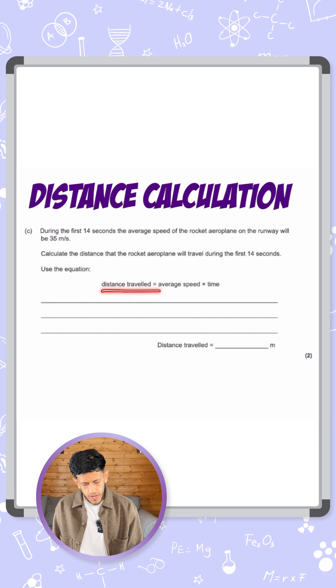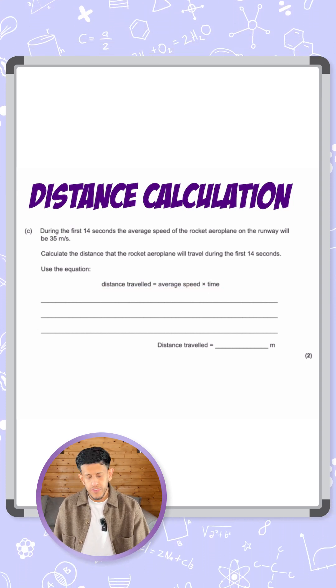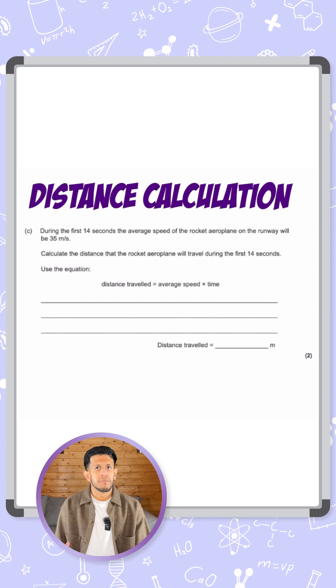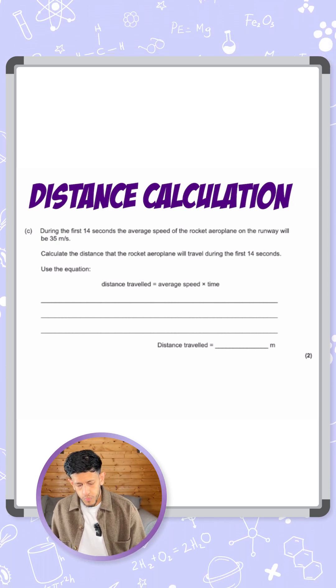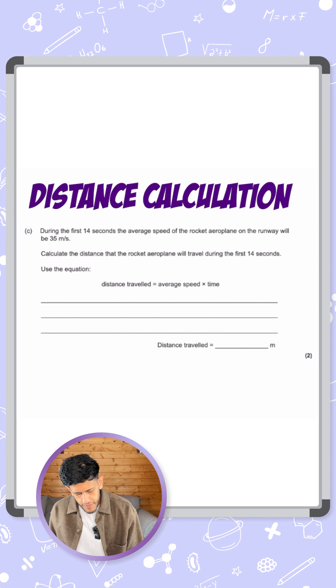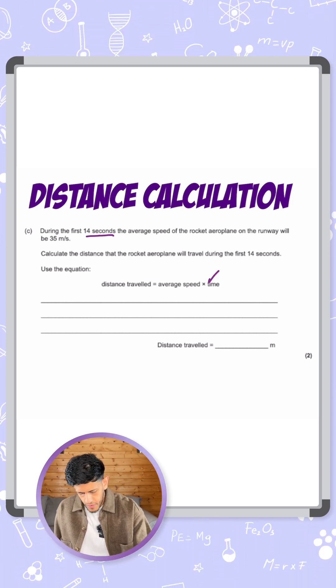Use the equation distance traveled equals average speed times time. So they've given us the equation here, and it's for two marks. So it's going to be using the numbers they've given us to calculate the answer. So I'll go back and keep underlined what key numbers we need to know. So we're given first 14 seconds. So that's a measure of time. So we've covered that, I'll give that a tick.